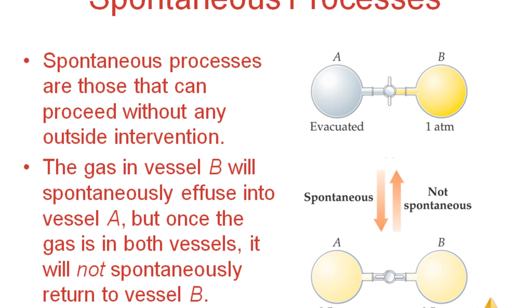But once the gas is in both vessels, if you close the piston again, the gas won't automatically go back to chamber B. The reverse process is not spontaneous. If you want to push the gas back to chamber B, you have to do something else — just closing the lock won't do it. So a spontaneous process occurs without any intervention, whereas a non-spontaneous process does not happen naturally — for a non-spontaneous process, you may have to do some work.